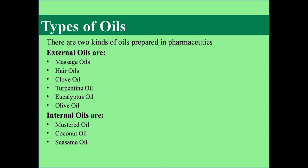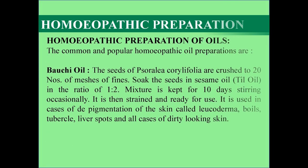There are two kinds of oil prepared in pharmaceutics: external oils and internal oils. External oils include massage oil, hair oil, clove oil, turpentine oil, eucalyptus oil, and olive oil. Internal oils include mustard oil, coconut oil, and sesame oil. Mostly oils are prepared in pharmaceutics for external use, though sometimes for internal use as well.